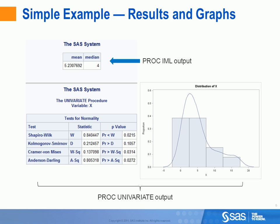The output looks something like this. You'll have your PROC IML output, and then following, you will have the output from PROC Univariate. For example, you will have a table which describes various tests for normality. You will also have a histogram with a curve which represents the kernel density estimate of the data. The XY points on that curve we will revisit in a few slides.